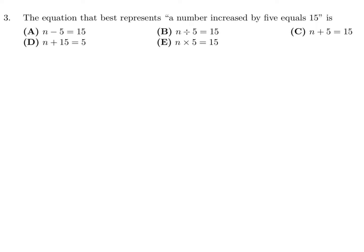The equation that best represents 'a number increased by 5 equals 15.' Let's say the number is N. Increased by 5, so N plus 5 equals 15. The answer choice that looks like that is C. Just be careful when you circle it, because some of these look very similar, and when you're in a rush you might circle the wrong one.